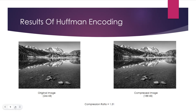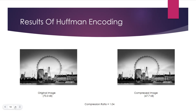For the first image, originally sized at 246 KB, the compressed version achieves a size of 188 KB, resulting in a compression ratio of approximately 1.31. This suggests relatively efficient compression, indicating that Huffman coding was able to significantly reduce the file size while preserving essential information. For the second image with an initial size of 70.3 KB, the compressed file size was 67.7 KB, leading to a compression ratio of approximately 1.04. Although there is still a reduction in size, the compression ratio is lower compared to the first image, implying the second image had characteristics less amenable to Huffman compression.